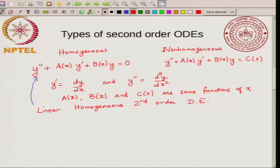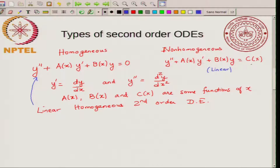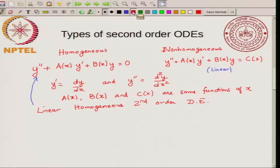The only difference between homogeneous and non-homogeneous is the extra term c(x) on the right-hand side. The non-homogeneous equation is still linear because the maximum power of y in each term is 1, but it is non-homogeneous because the right-hand side is not zero and does not contain y to the power 1. So we can classify second order differential equations as linear or non-linear, and then as homogeneous or non-homogeneous.